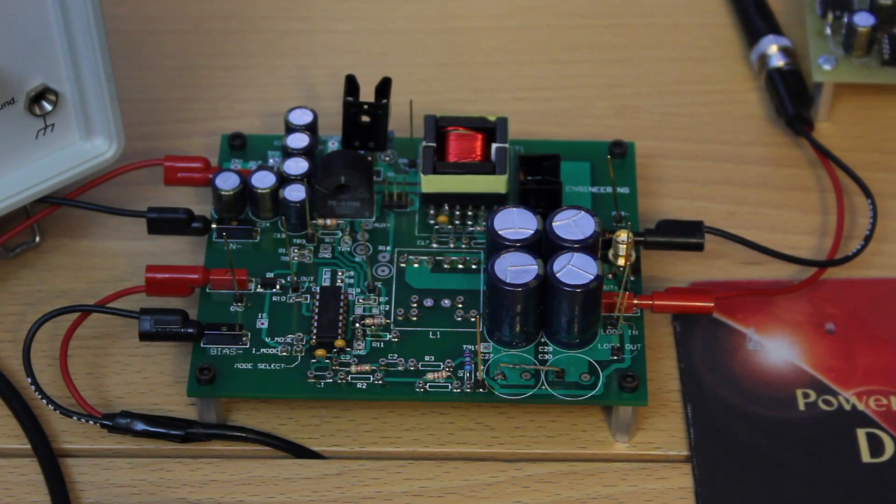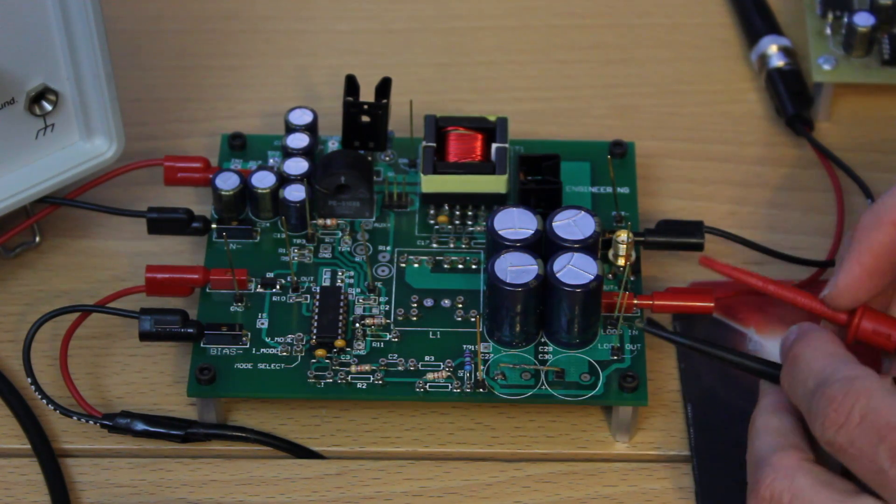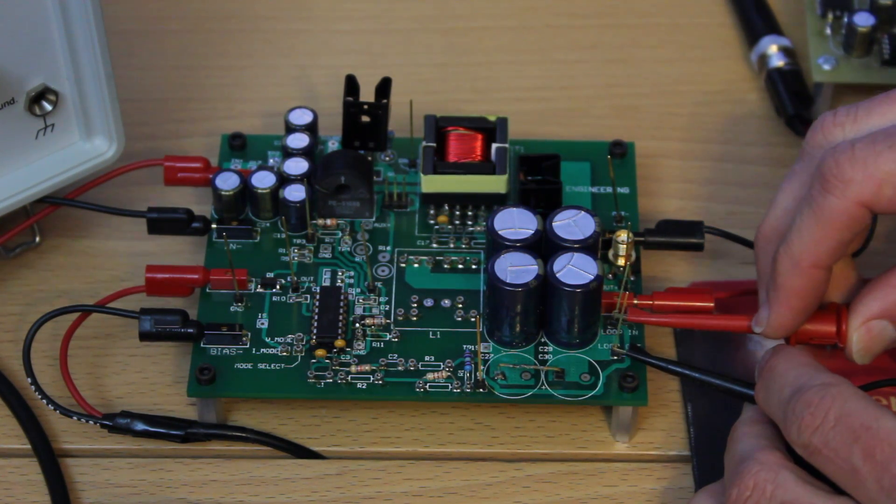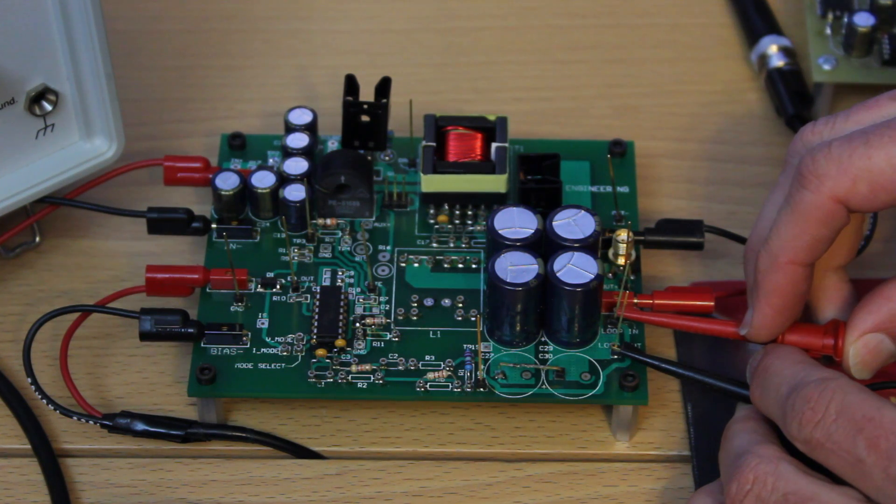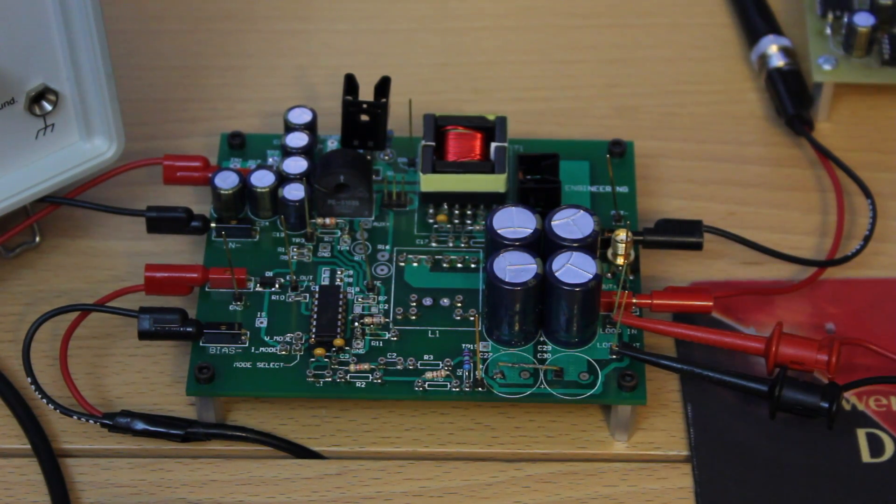So what we're going to do now is take the output of this injection isolator and we're going to tie it across these two test pins here, which are on either side of the injection resistor in the feedback loop of the power supply. And I do recommend that you put that test resistor in your feedback loop when you're doing your board layouts.